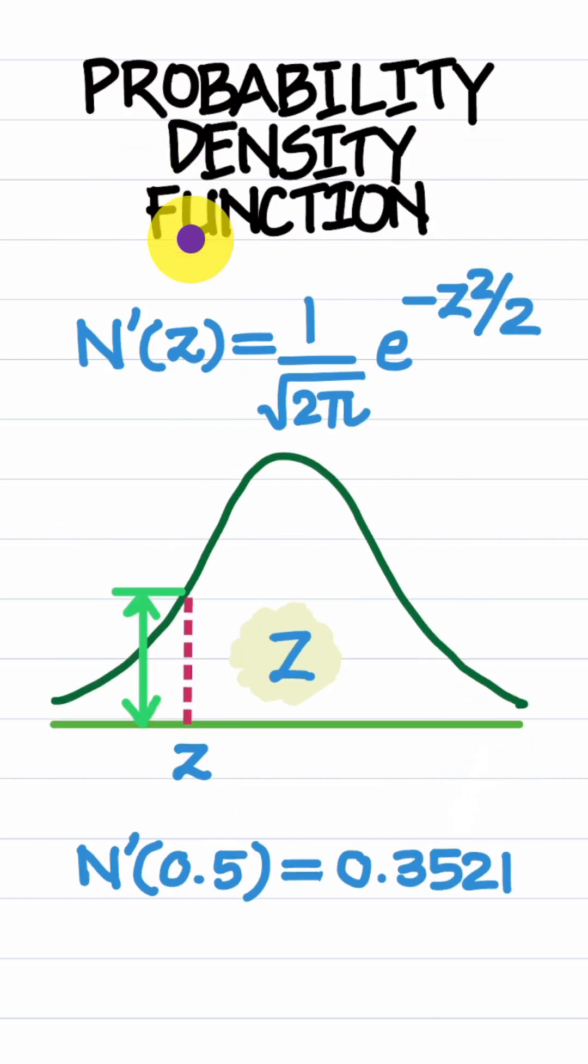Last, we have the PDF, N prime, which returns the height of the curve at any given Z. Think of this height as a measure of the likelihood of Z falling in the vicinity of a given value. You can use this formula to quickly check that N prime at 0.5 turns out to be this much.